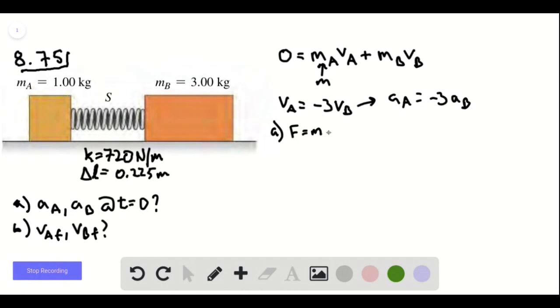So f equals ma. So then the acceleration of a is going to be k delta l divided by m, which remember this is one kilogram.